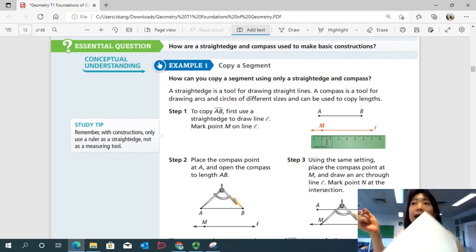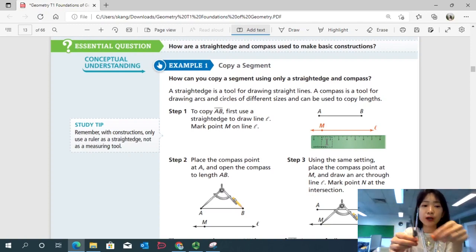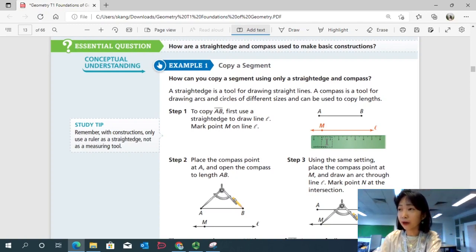Step two, place the compass point at A. So if you have a compass, you're going to place the tip, the sharp tip of the compass on A. And then you're going to adjust your compass so that the other end of the compass is on point B. Then you know the angle, the exact length that is measured from point A to B, right? Then you're going to use the same angle. So do not change your compass. Make sure you're not changing or bending the compass while you're moving it. And you're going to put the tip of the compass on point M.